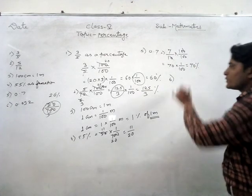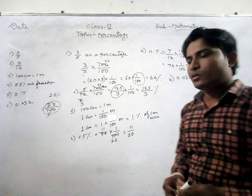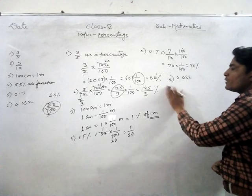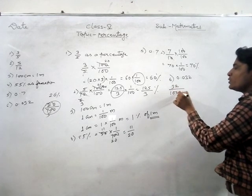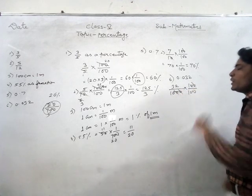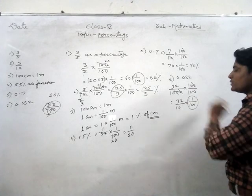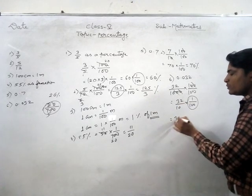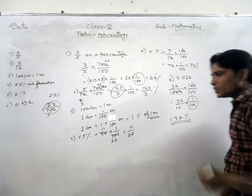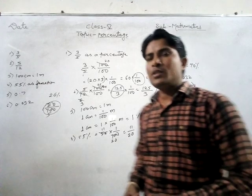The last question is 0.032 - convert this decimal value into a percentage. After removing the decimal, that is 32 upon 1000, multiplied by 100 upon 100. Two zeros cancel out, giving 32 by 10 into 1 upon 100, which is the percentage symbol. So 32 by 10 means 3.2 percent. Therefore 0.032 is 3.2 percent of any given number. I hope you understood the percentage. Thank you.